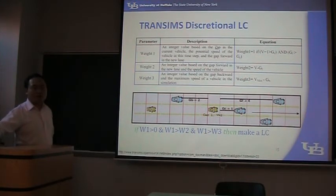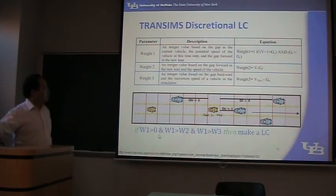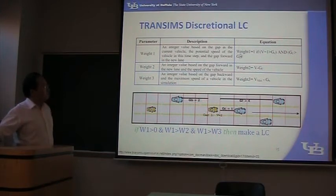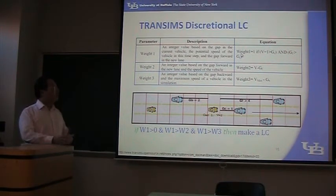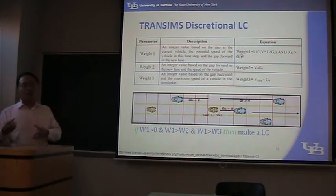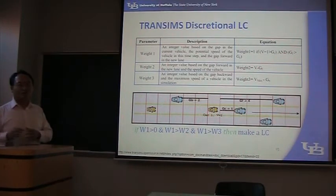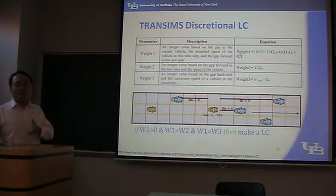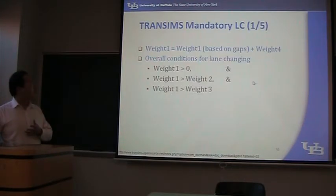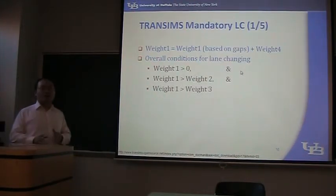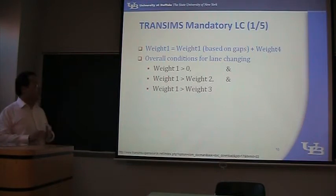Do you have any questions about the discretional lane change? Let me emphasize: Weight 1 is a good reason, and Weight 2 and Weight 3 are bad reasons. So Weight 1 is the bigger the better, and Weight 2 and Weight 3 are the smaller the better.